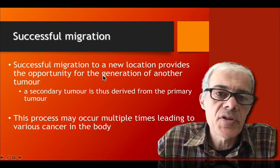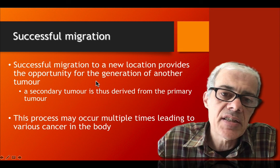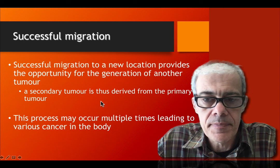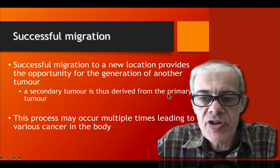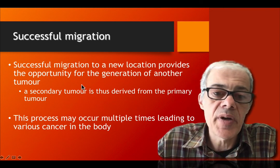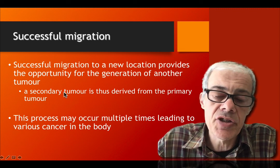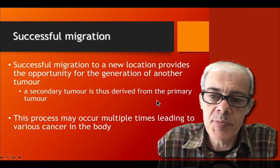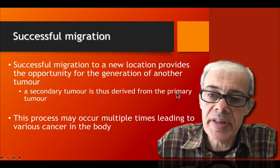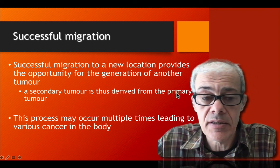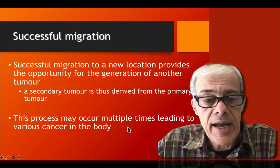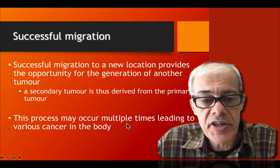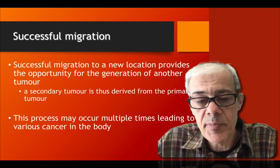Upon successful migration, metastasized cells establish another tumor at a new location. We have a primary tumor giving rise to a secondary tumor — the secondary tumor follows metastasis, while the primary tumor is the one that gave rise to it. This process can occur multiple times, leading to a proliferation of cancer in different parts of the body.